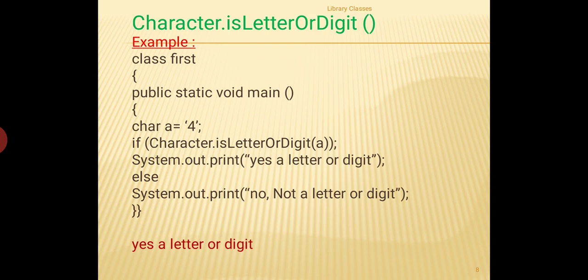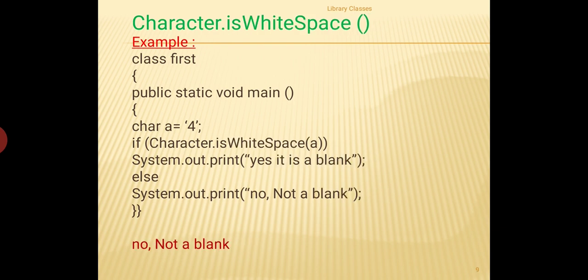The next function is isLetterOrDigit(), which will tell you whether the character stored is a letter or a digit. Here I have given an example program using an if statement — just to show that a boolean function can display output as true/false, or it can be used to run the if block. A character 4 is stored, and since it is a letter or digit, it executes the yes part and displays 'yes, a letter or digit'.